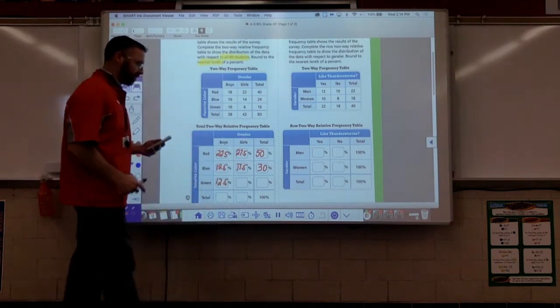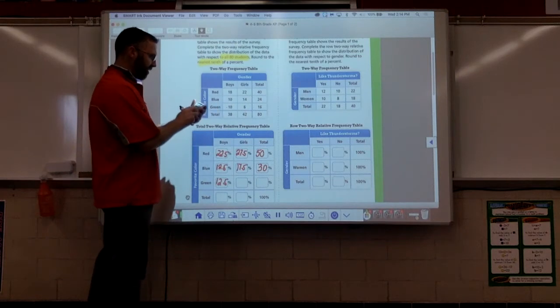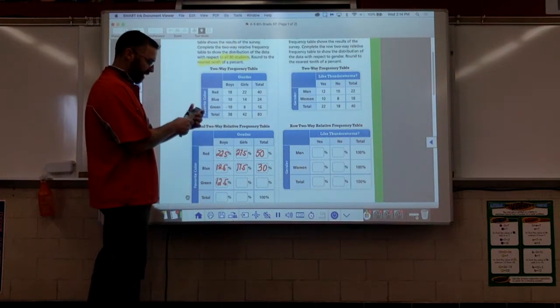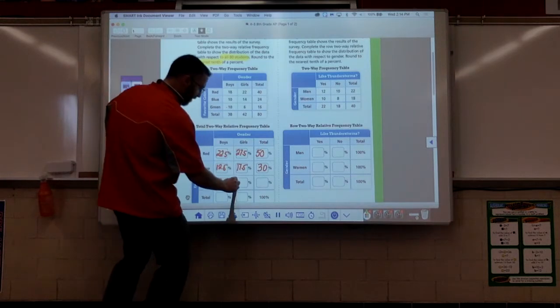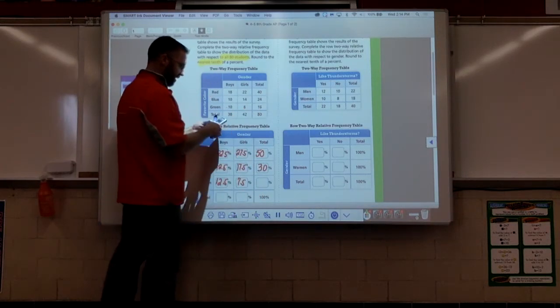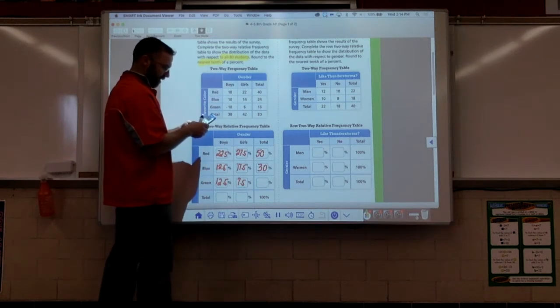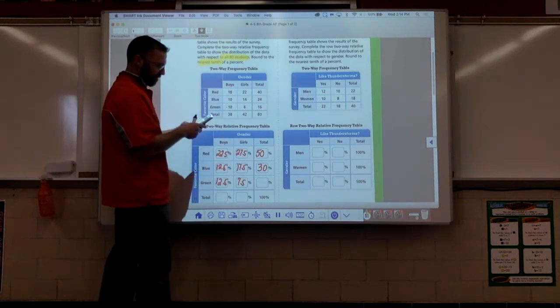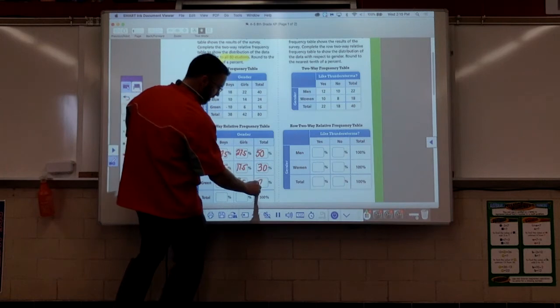Moving over here, this is 6 out of 80. 6 divided by 80 times 100, boom, 7 and a half. Total column, this is 16 out of 80. 16 divided by 80 times 100, hey this is 20.